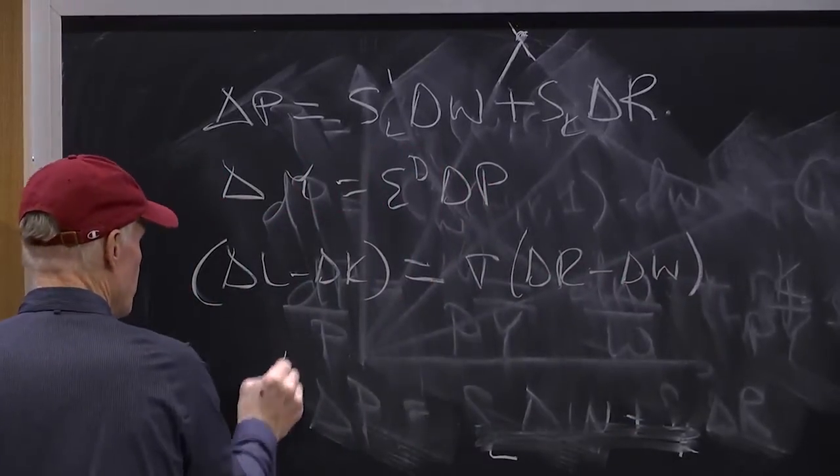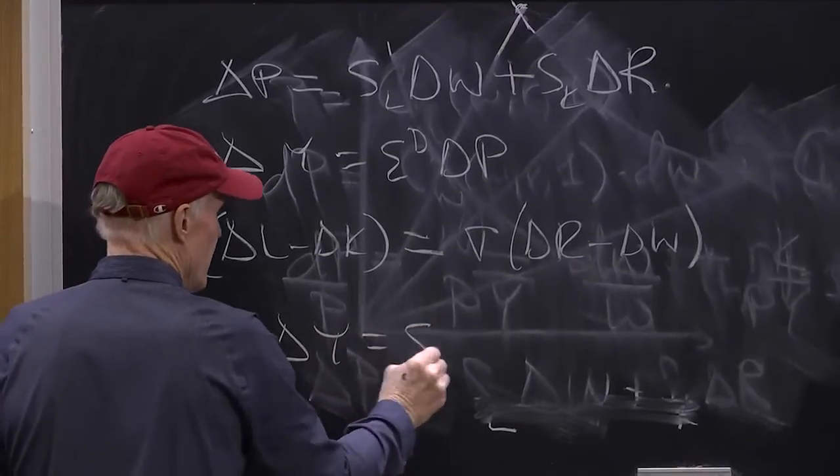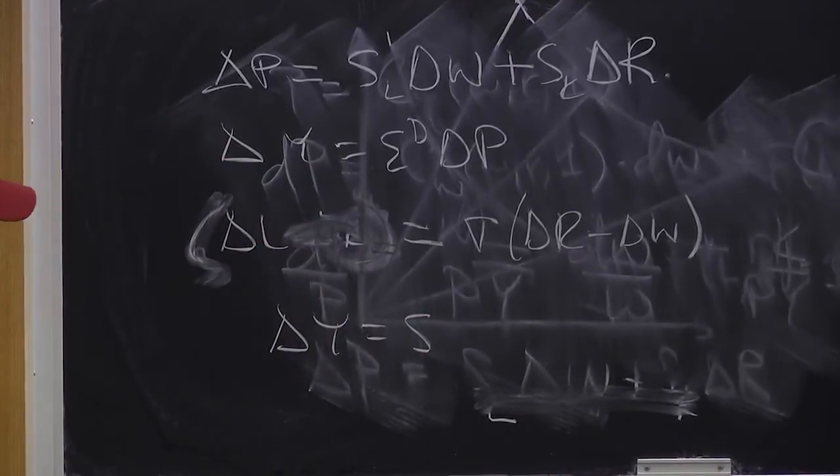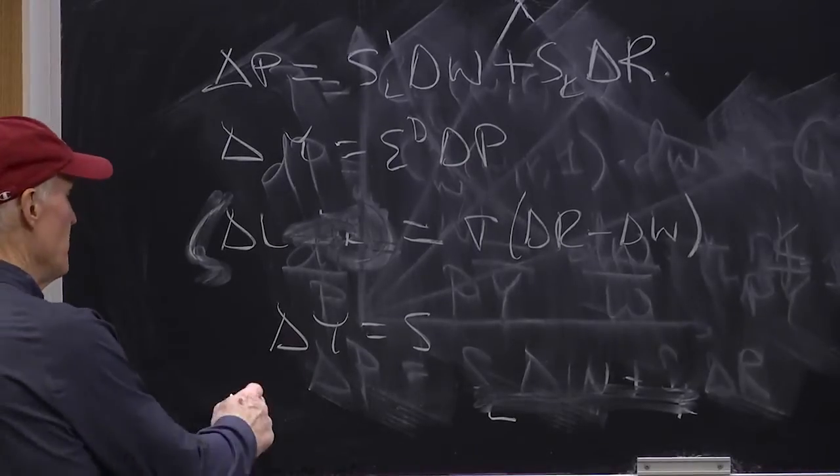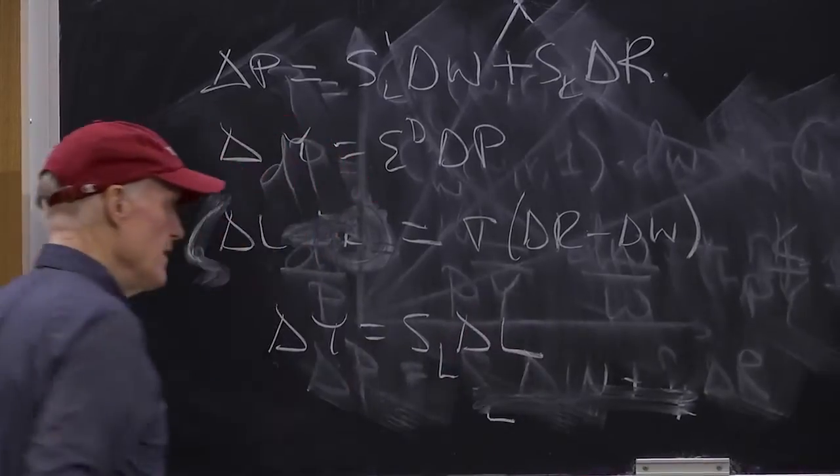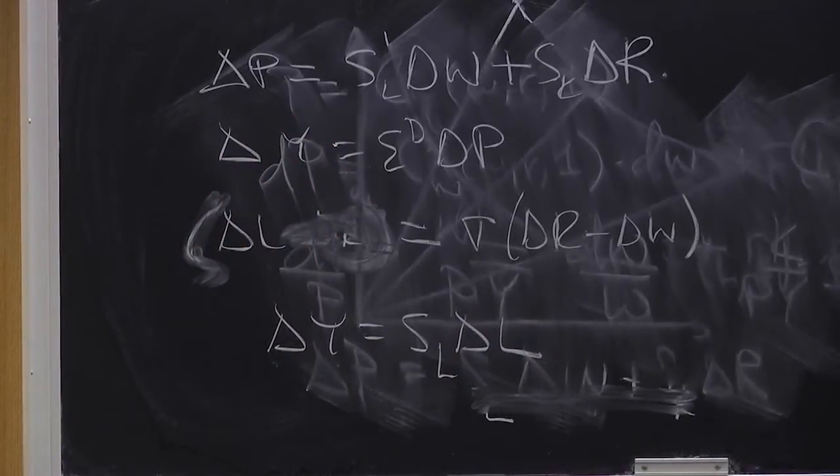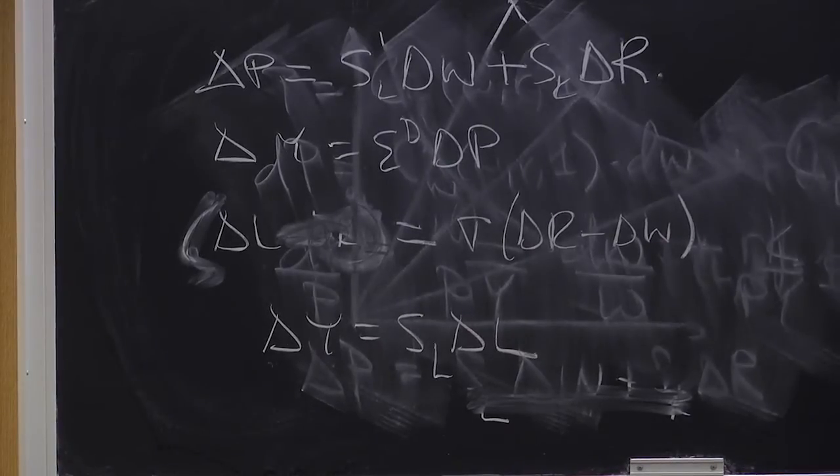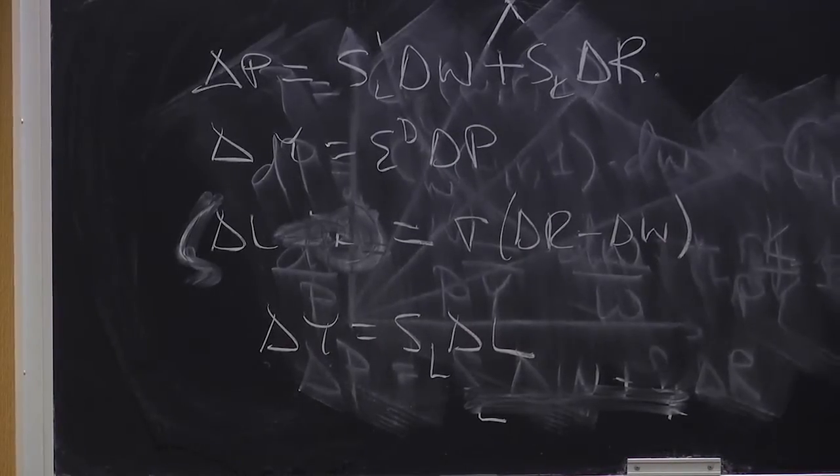And my last equation becomes delta Y equals... oh, I'm sorry, that's zero. Sorry. Delta L equals sigma delta R minus delta W. And my last equation is delta Y equals SL delta L. And then you solve those equations. That would be the short-run demand for labor.